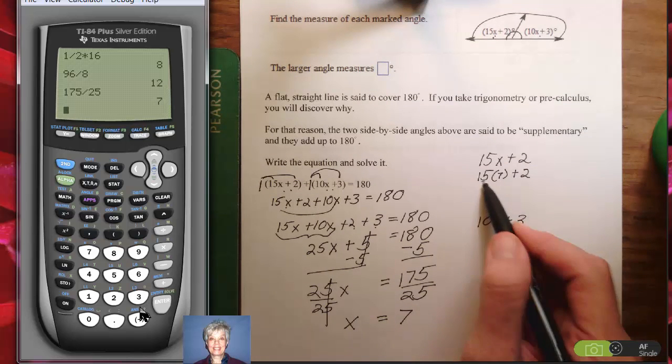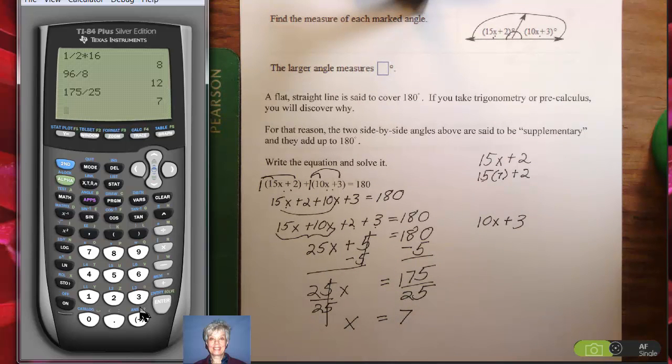Well, what is 15 times 7? Let's put 15 times 7 plus 2 into the calculator. I'm going to clear, and I'm going to say 15 parentheses 7, parentheses closed, plus 2, enter. That's 107 degrees.